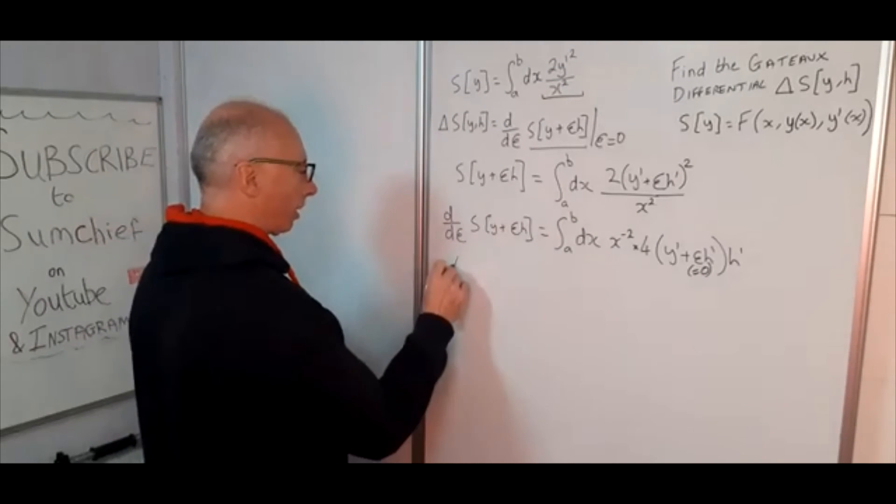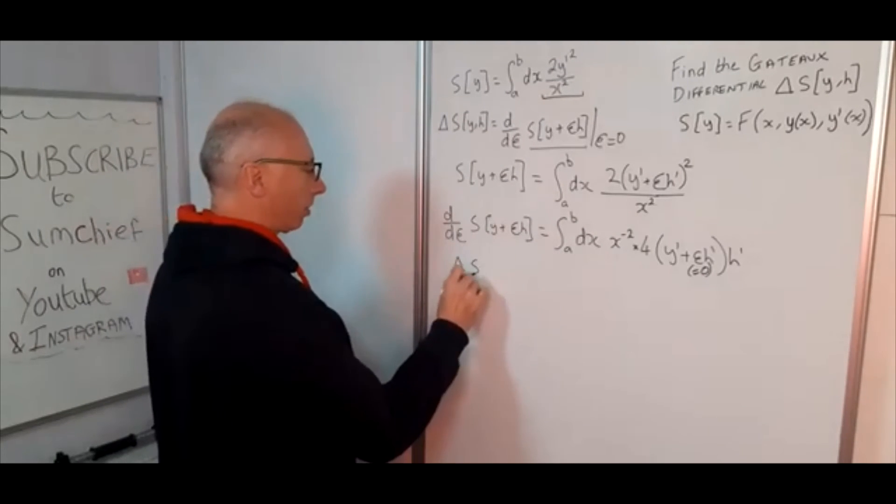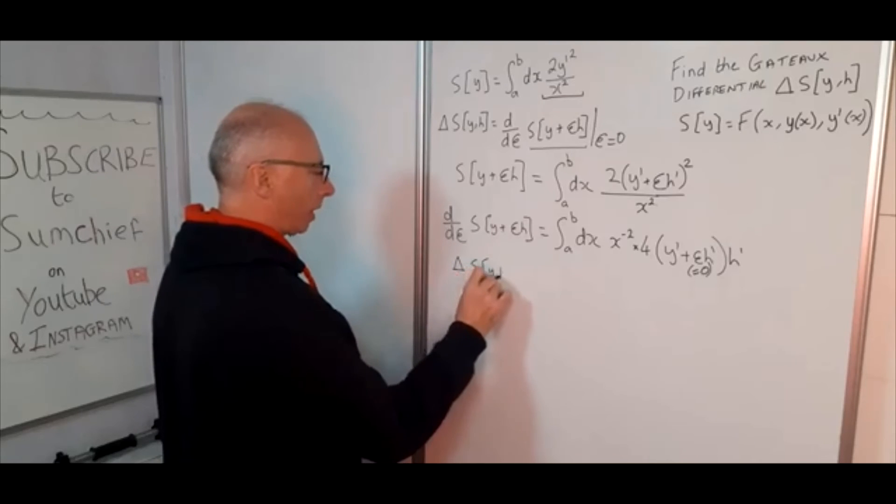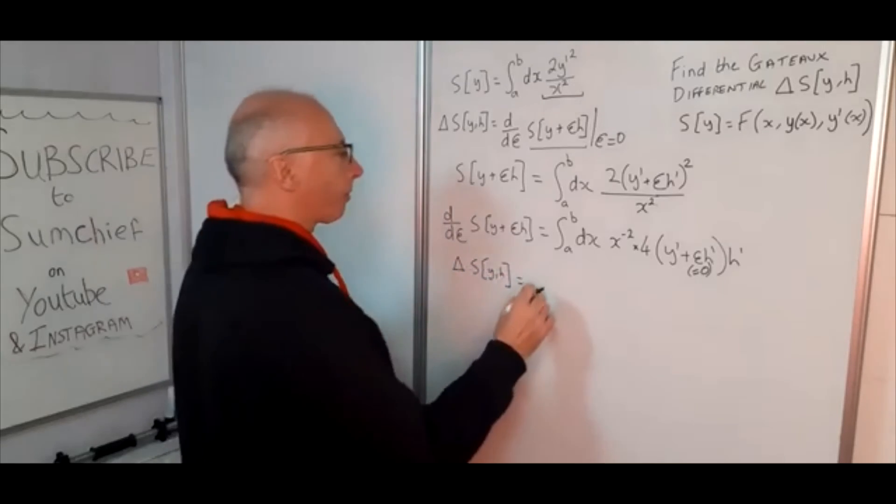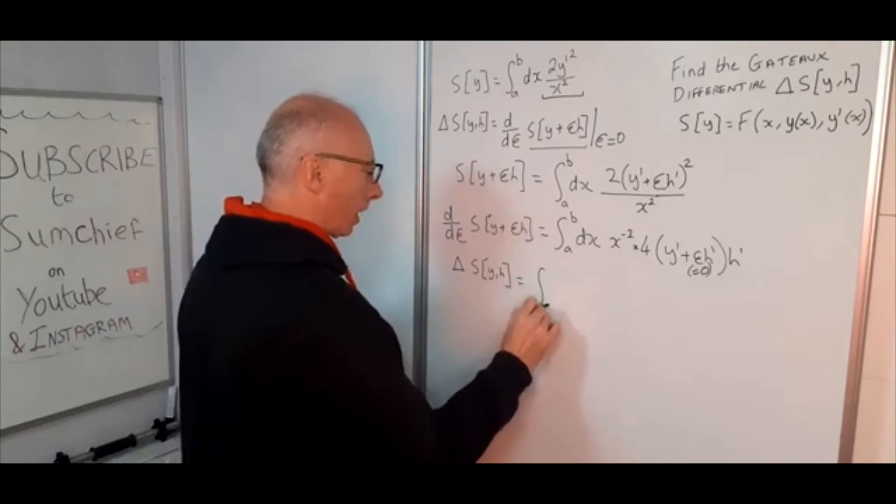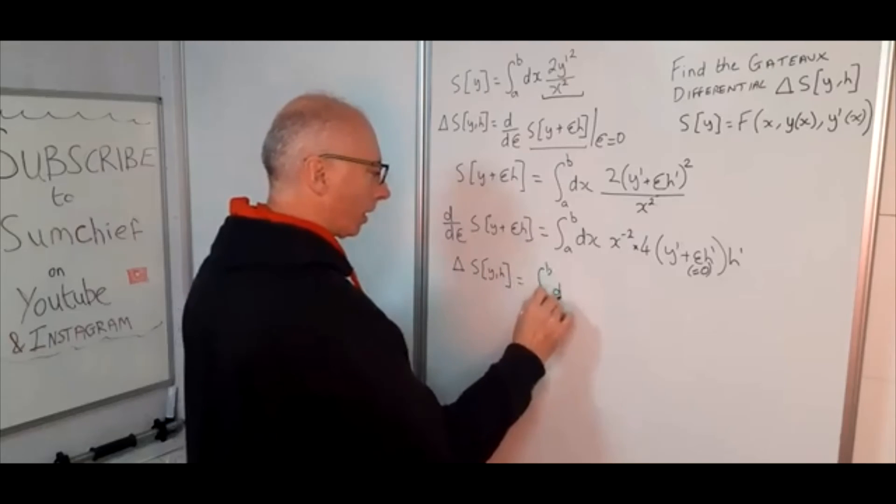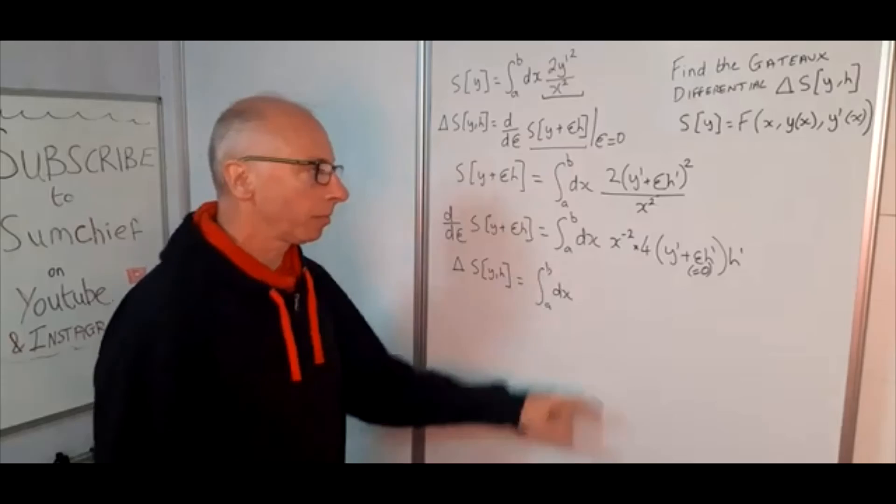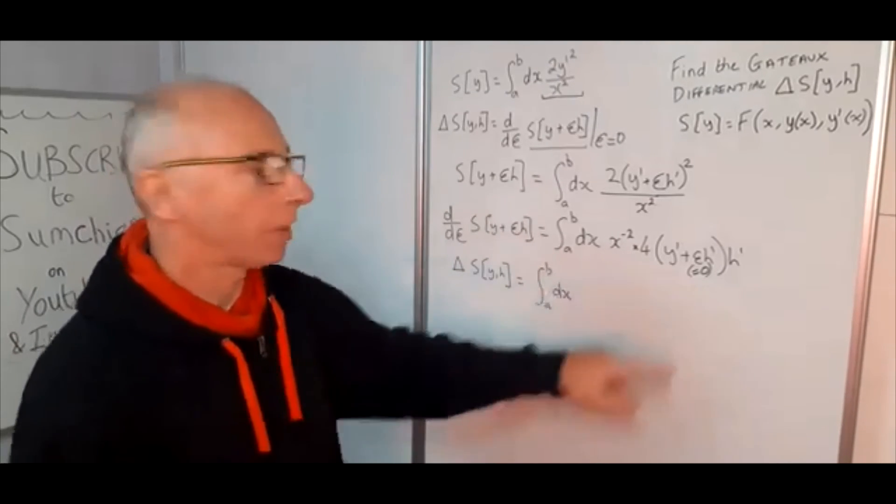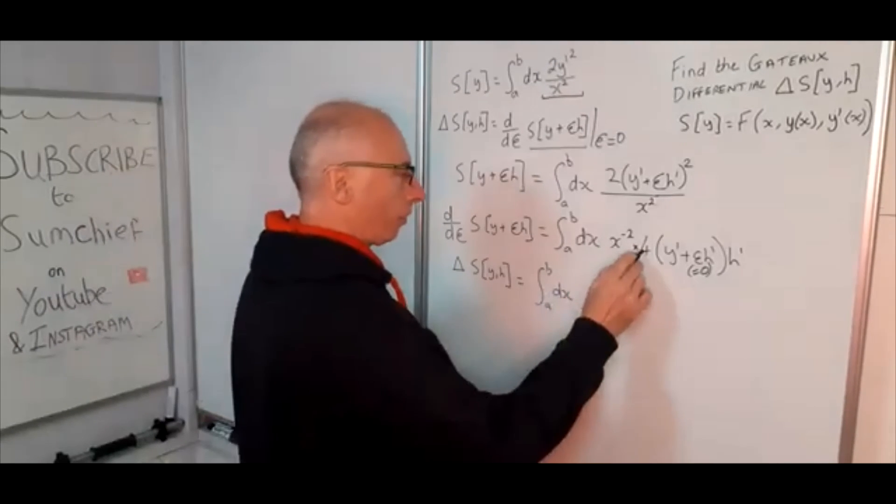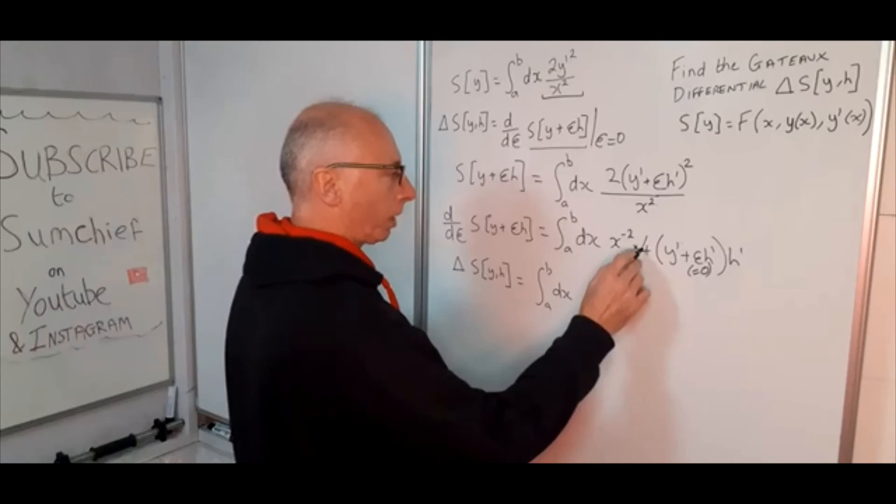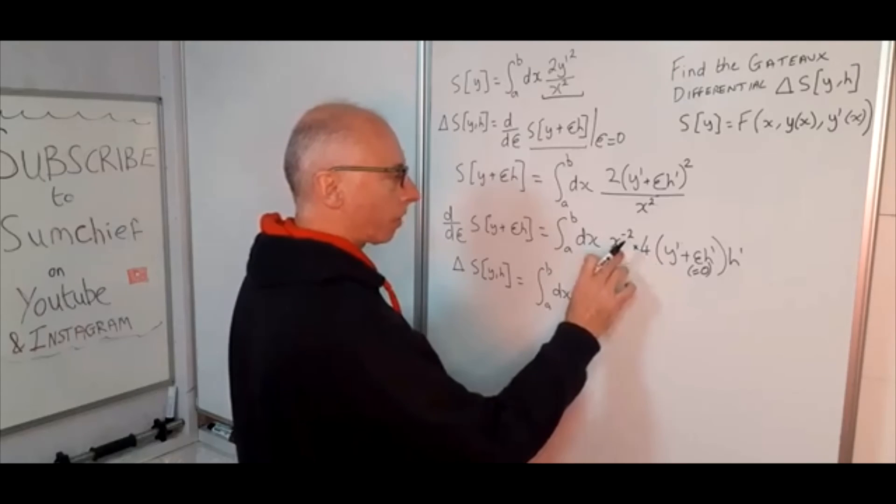So now what we need to do is just simplify this functional here. So now we can write our Gateaux differential y comma h equals from a to b and the dx, that stays the same. What we are going to do now is simplify this. So the four, which is a constant multiple, let's deal with this first. We will come to the x minus two in a minute. Four can come out front, that is just a multiple, that is just as in normal.